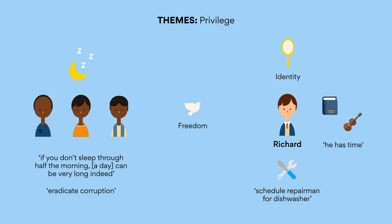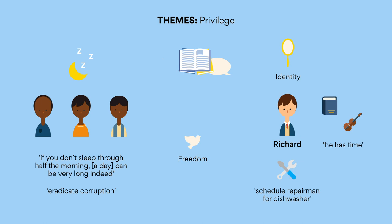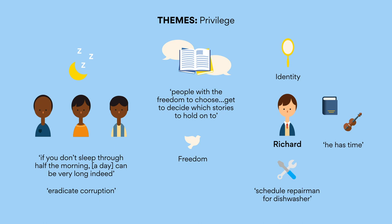Freedom in general is a useful way to think about privilege in this text. Besides freedom to choose how you spend your time, this can also look like the freedom to tell your story. While Richard helps the men with this to some degree, even he has a limited amount of power. Richard realizes that people with the freedom to choose get to decide which stories to hold on to — and those are the people who get to decide the future of refugees, at least from a legal perspective.